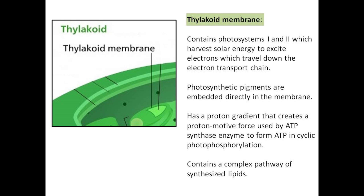The thylakoid membrane contains photosystems I and II, which harvest solar energy to excite electrons that travel down the electron transport chain. Photosynthetic pigments are embedded directly in the membrane. A proton gradient creates a photomotive force used by ATP synthase enzyme to form ATP and cyclic photophosphorylation.